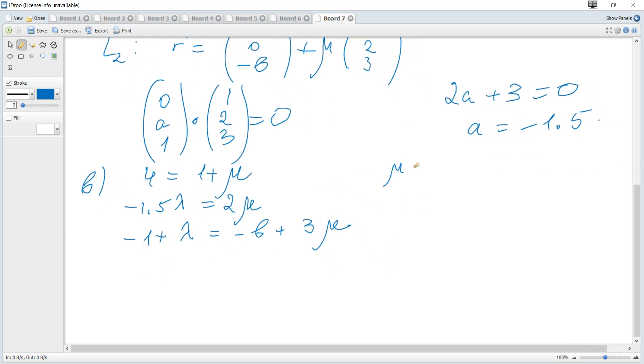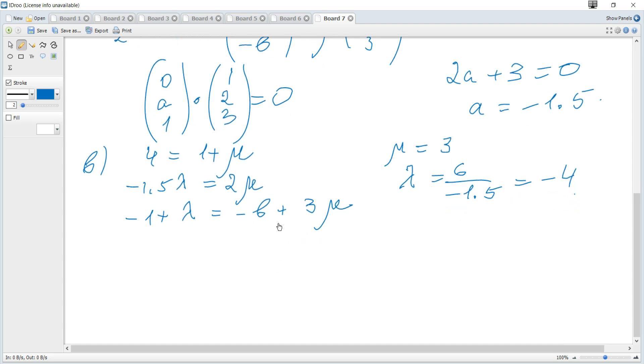And from the first, you can see that mu is 3. Then from the second, lambda is 6 divided by negative 1.5, which is negative 4.